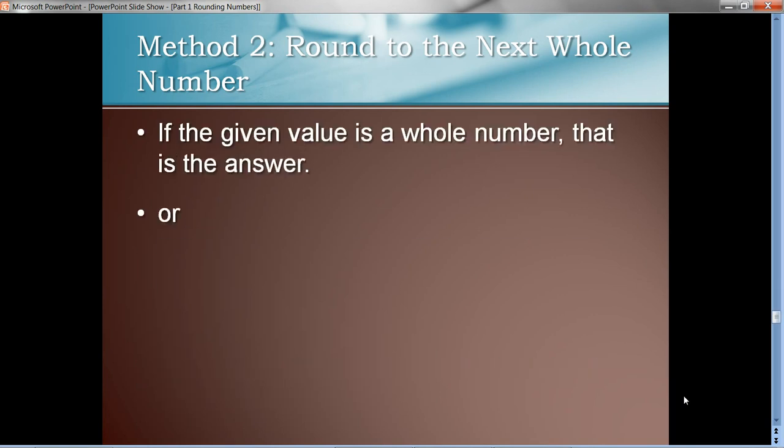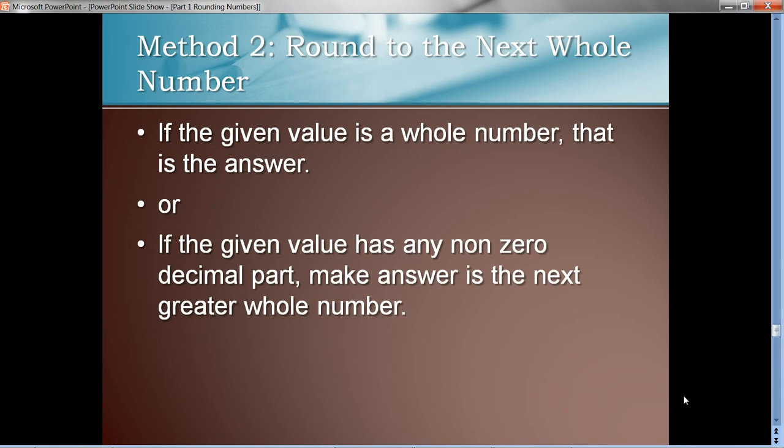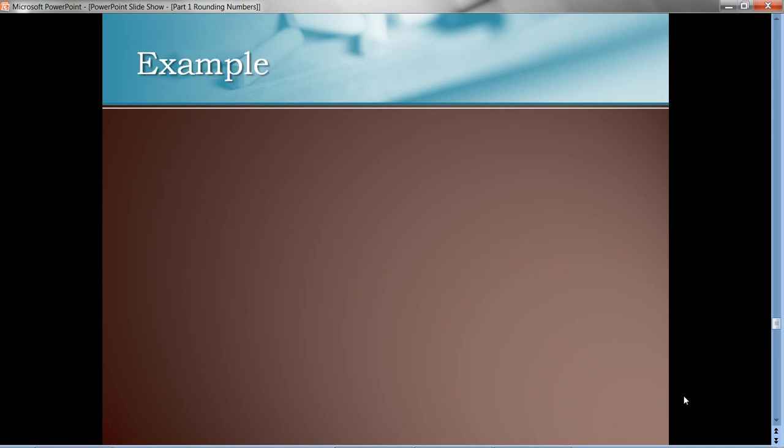And then, if the given value has any non-zero decimal part, no matter how small, we make the answer the next greater whole number. In other words, we want to round up to the next whole number.